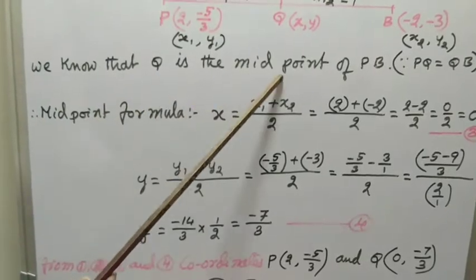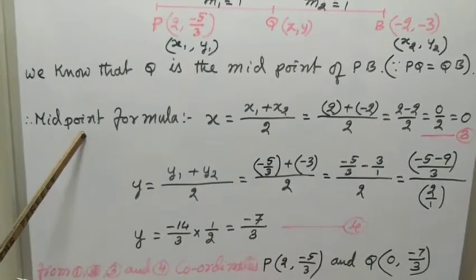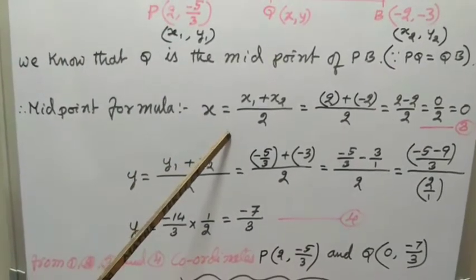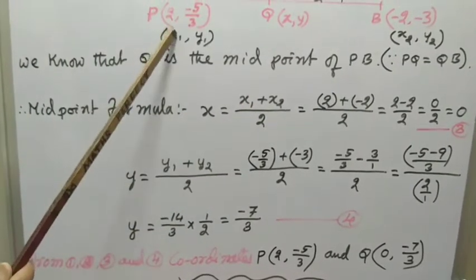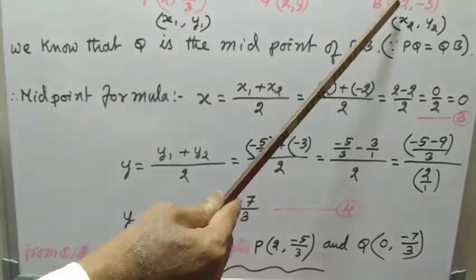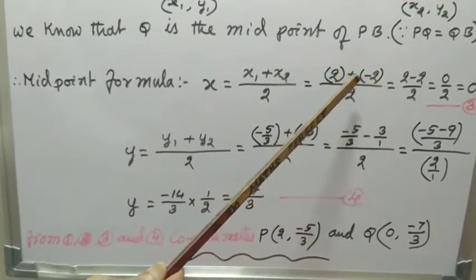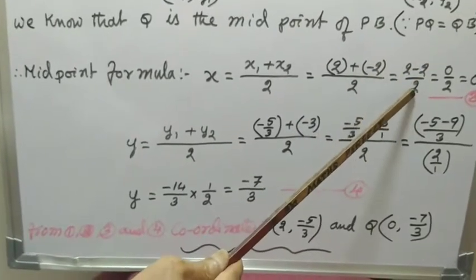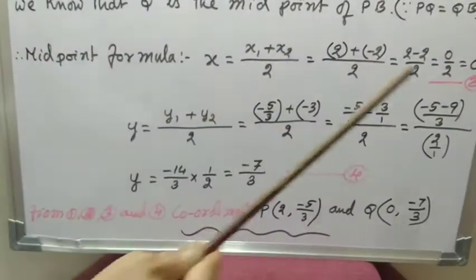We know that Q is the midpoint of PB because PQ equals QB. Using the midpoint formula: X equal to (X1 + X2) divided by 2. X1 is 2 and X2 is -2. Remove the brackets: plus 2 plus (-2) divided by 2. Plus 2 minus 2 equals 0, divided by 2 equals 0. So X equal to 0.